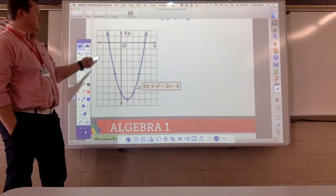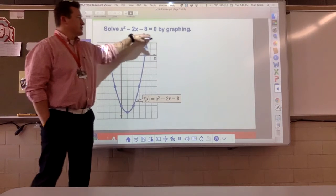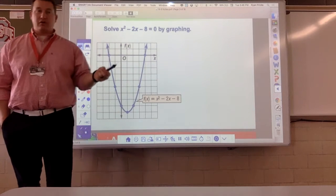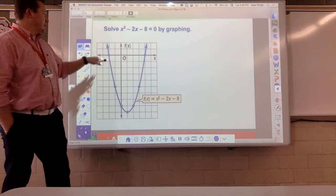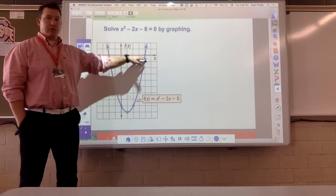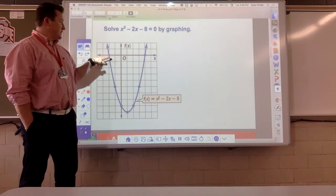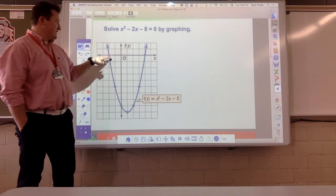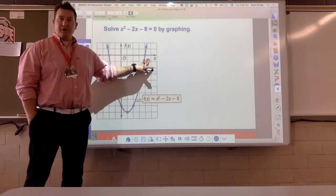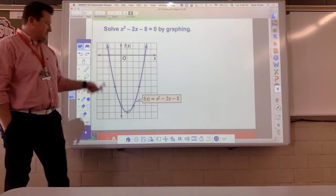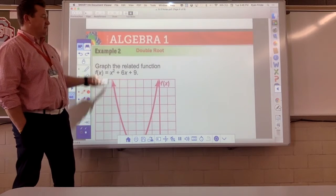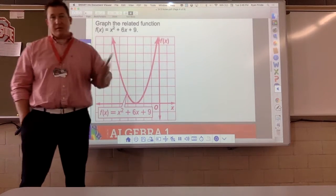Same thing here. Again, notice. Trinomial set equal to zero. We're graphing it. I'm looking for the x-intercepts, the roots, the solutions. This number here, this number here. This is negative two. This is four. Done. That's it. You're thinking, well, we should just graph everything. That might not be a bad idea.